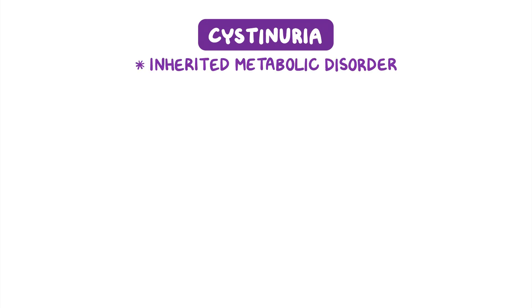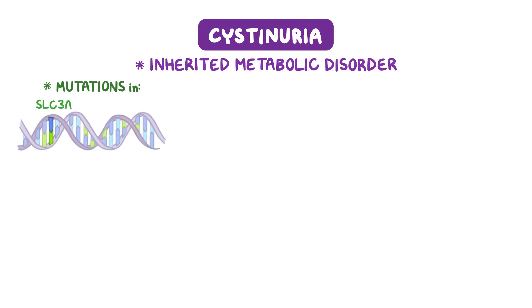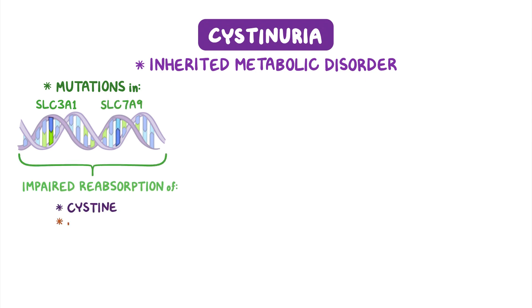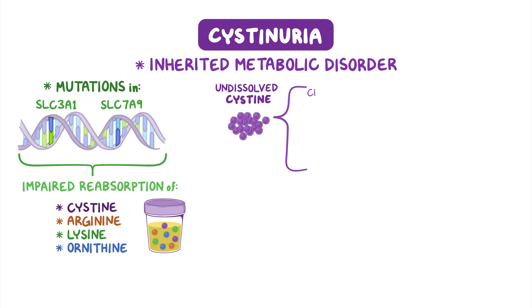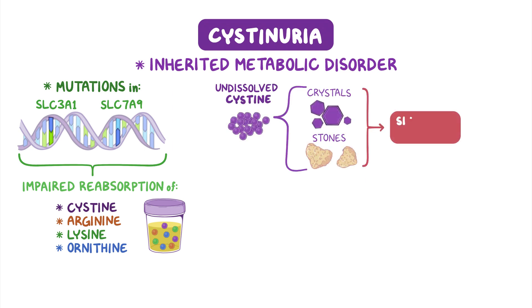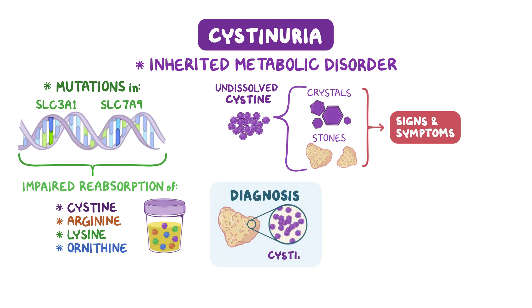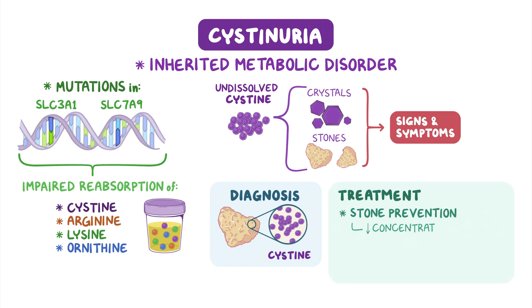As a quick recap, cystinuria is an inherited metabolic disorder caused by mutations in either the SLC3A1 or SLC7A9 genes. Impaired reabsorption of cysteine, arginine, lysine, and ornithine leads to their high levels in the urine. Throughout the urinary tract, undissolved cysteine can clump together and form crystals and stones, which cause the main signs and symptoms of the disorder. Diagnosis is based on confirmed 100% cysteine stones in urine. Treatment mostly focuses on stone prevention by lowering the concentration of cysteine, increasing its solubility by increasing urine pH, and using drugs like tiopronin to keep cysteine soluble.